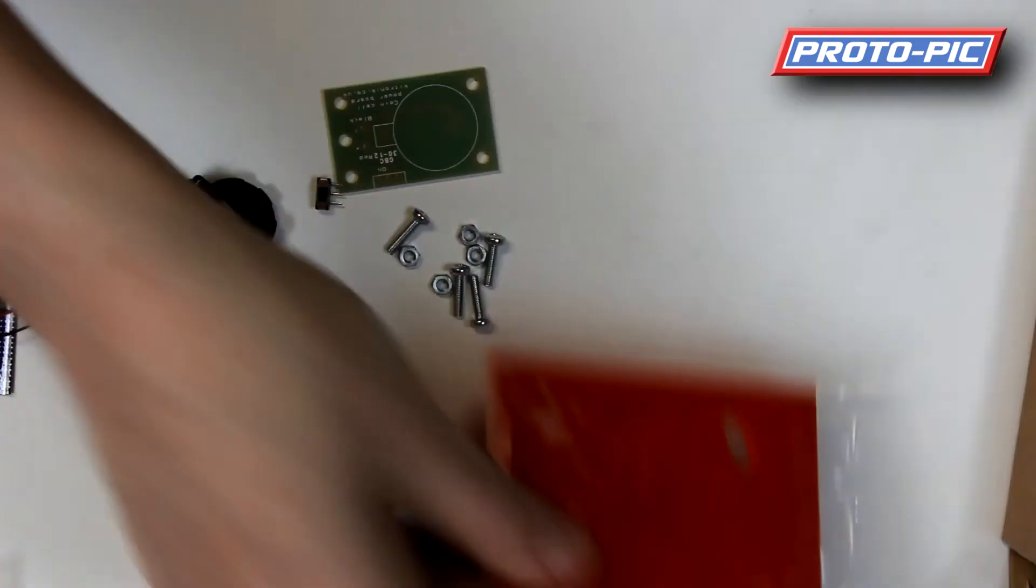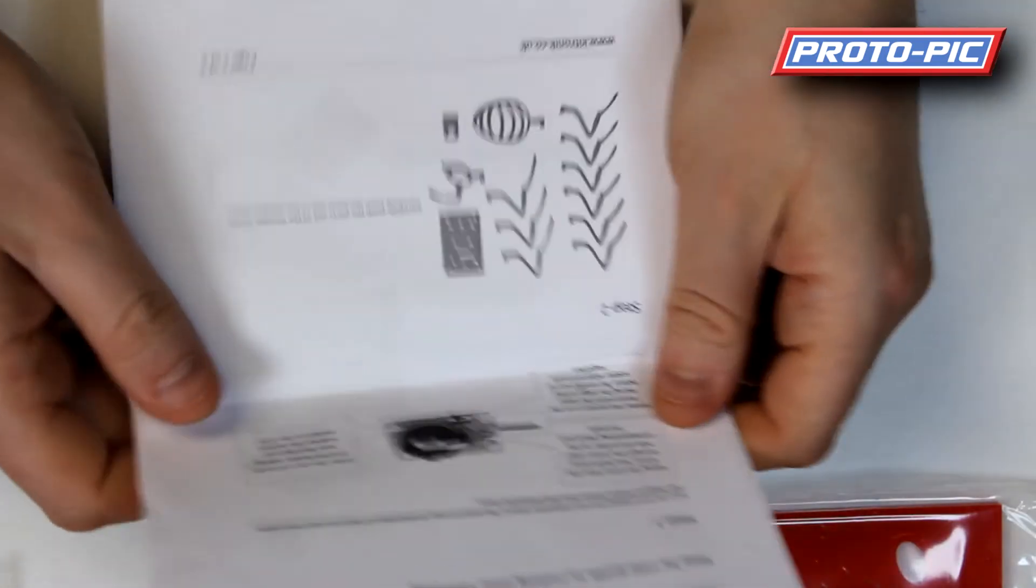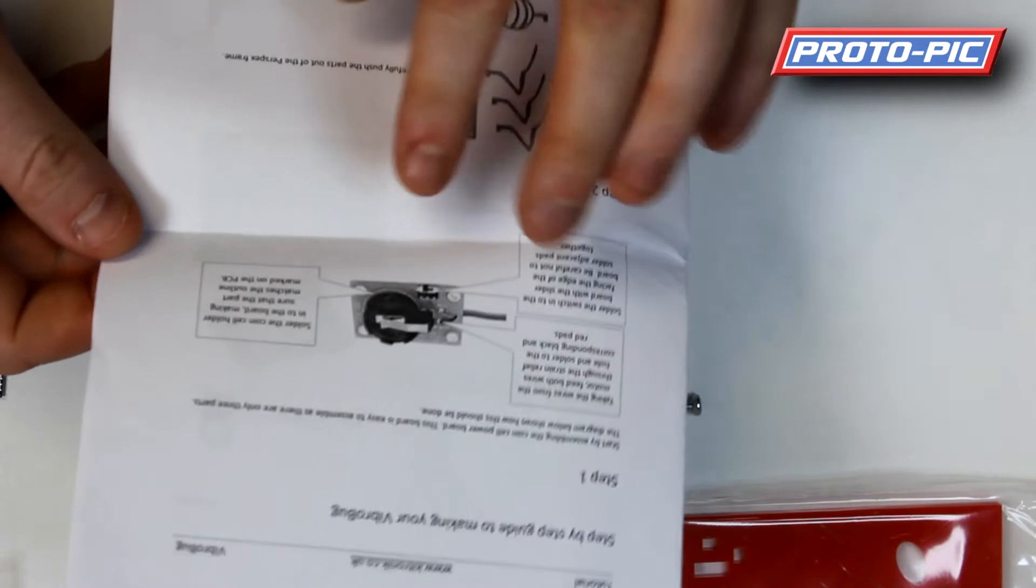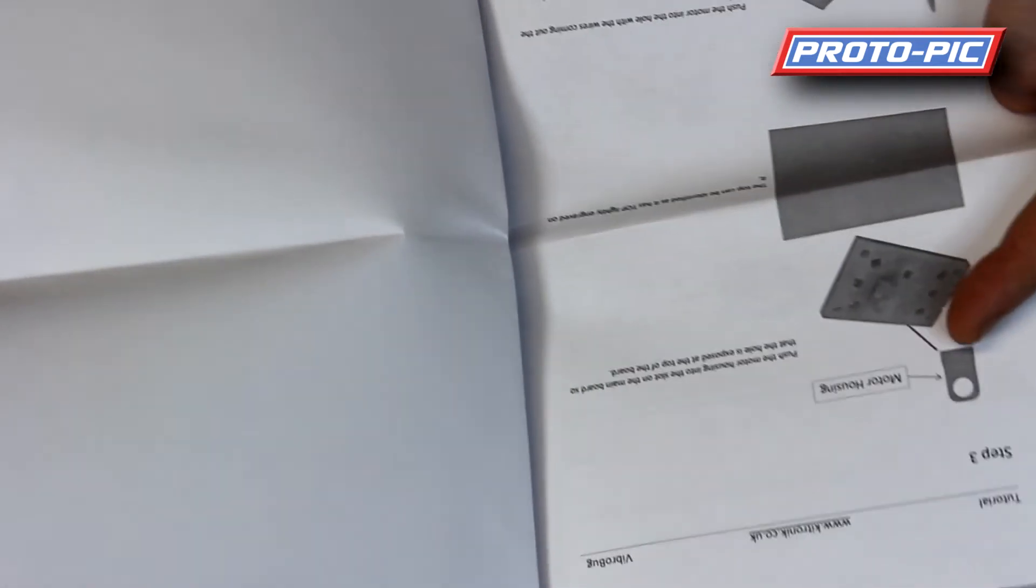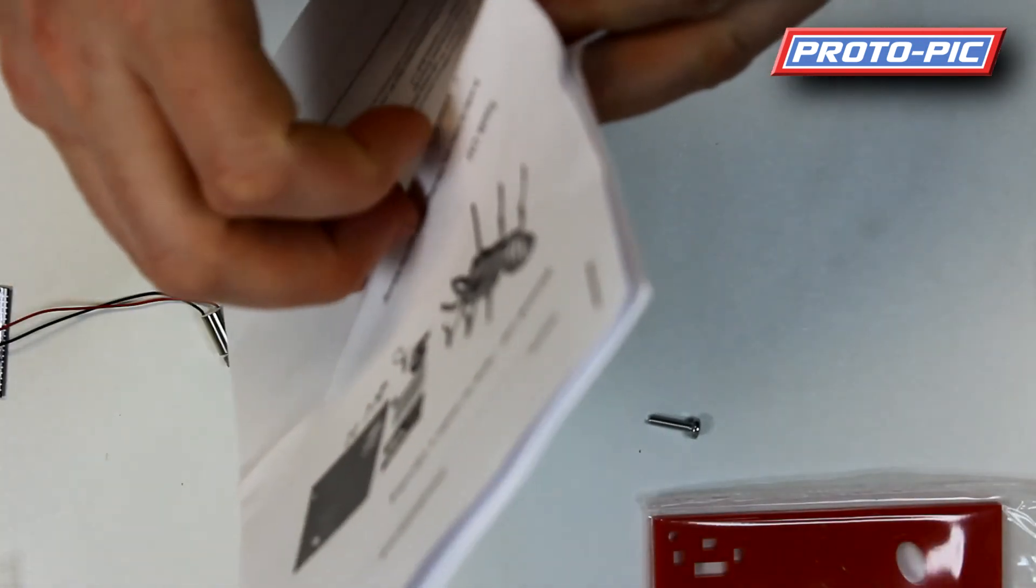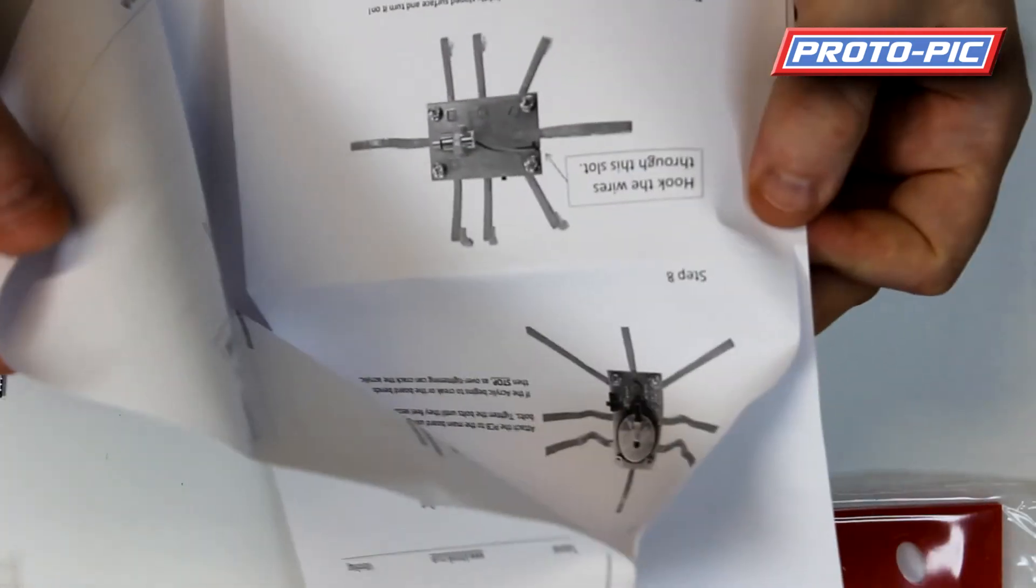And obviously in the kit you get the full build instructions and it's so simple there's only three components to solder on. It just tells you about pushing out the acrylic, joining it together and then tightening up the PCB board. Everything you require to make this bug is in the kit.